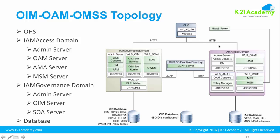If Identity Manager and Access Manager are in two separate domains like this, it is called a Split Domain topology or Split Domain Deployment. If both OIM and OAM are in the same single domain, that is called a Single Domain deployment. In our training we are going to do a hands-on with a single domain where we'll create one domain for both Oracle Identity Manager and Access Manager, though in an enterprise deployment they should be in separate domains.